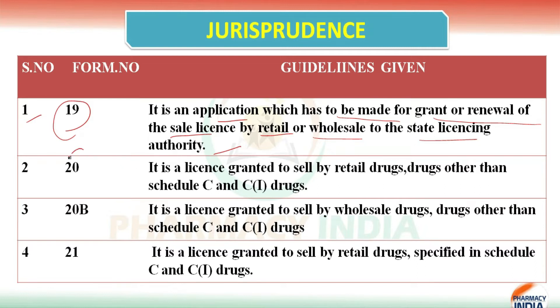The second one is Form Number 20, and it is a license granted to sell by retail drugs and drugs other than Schedule C and C1.